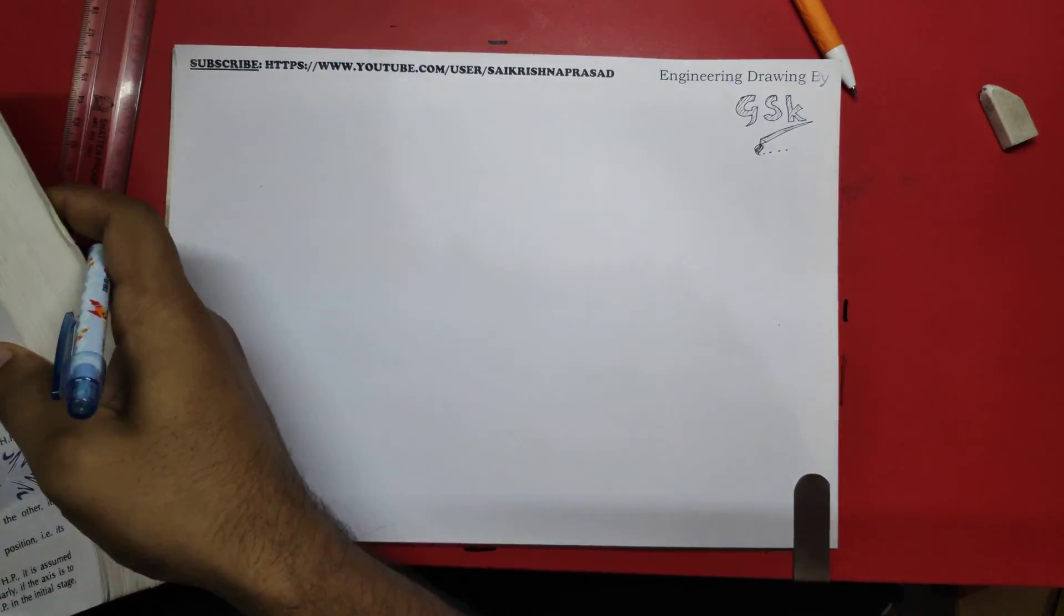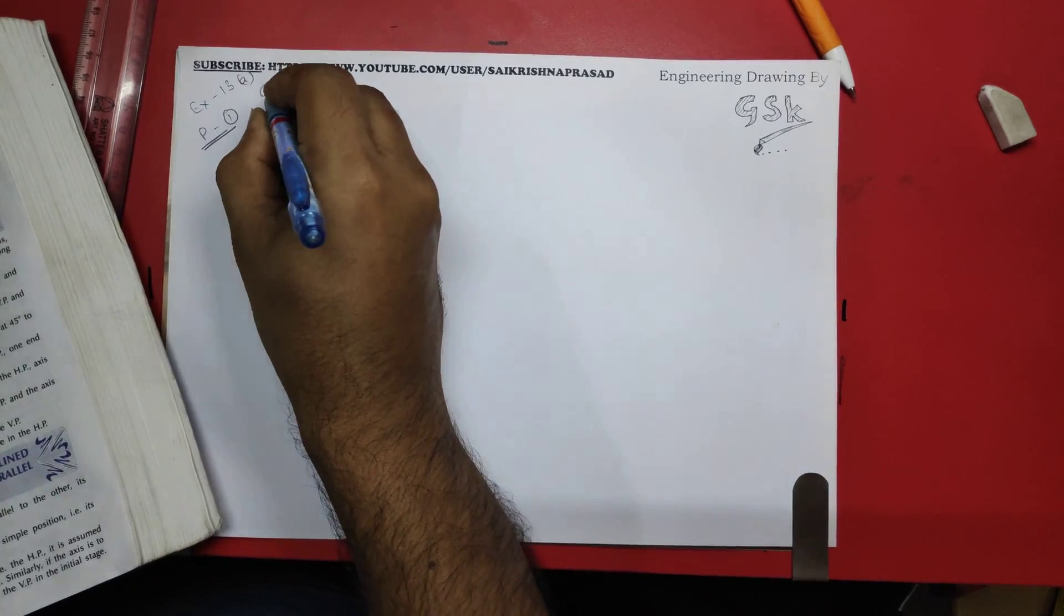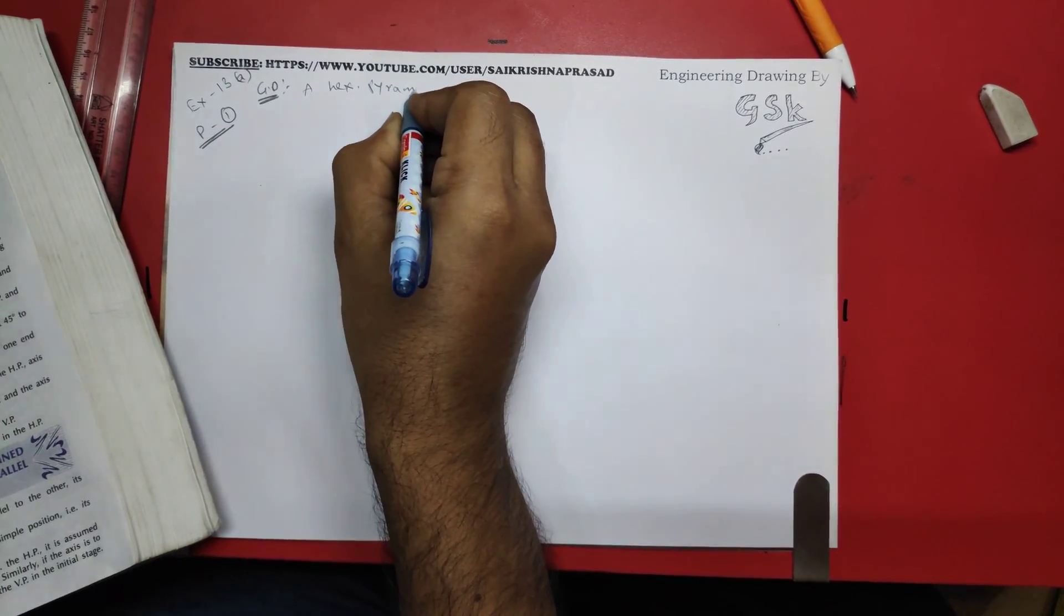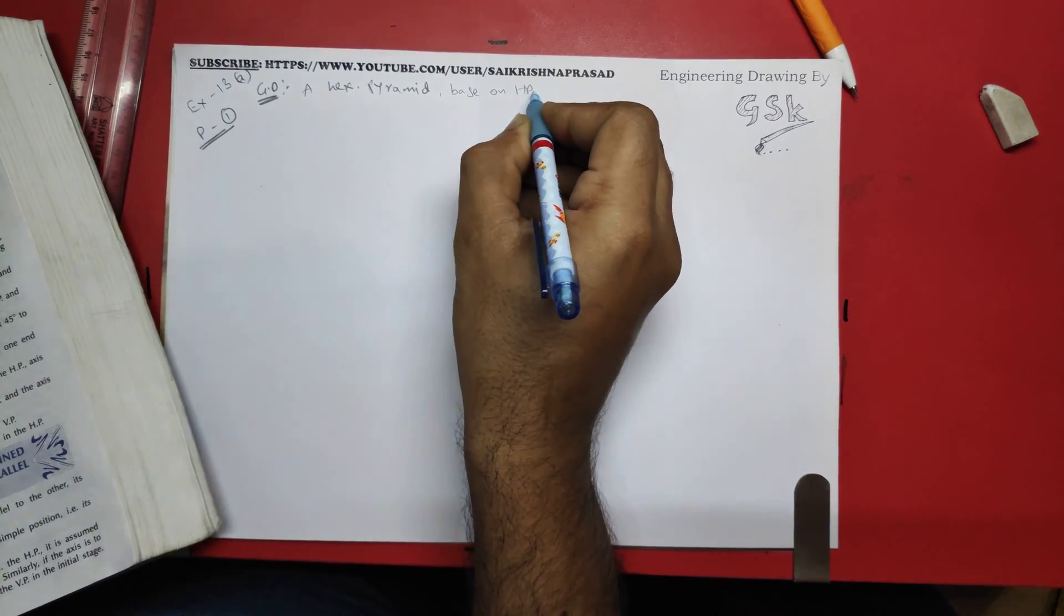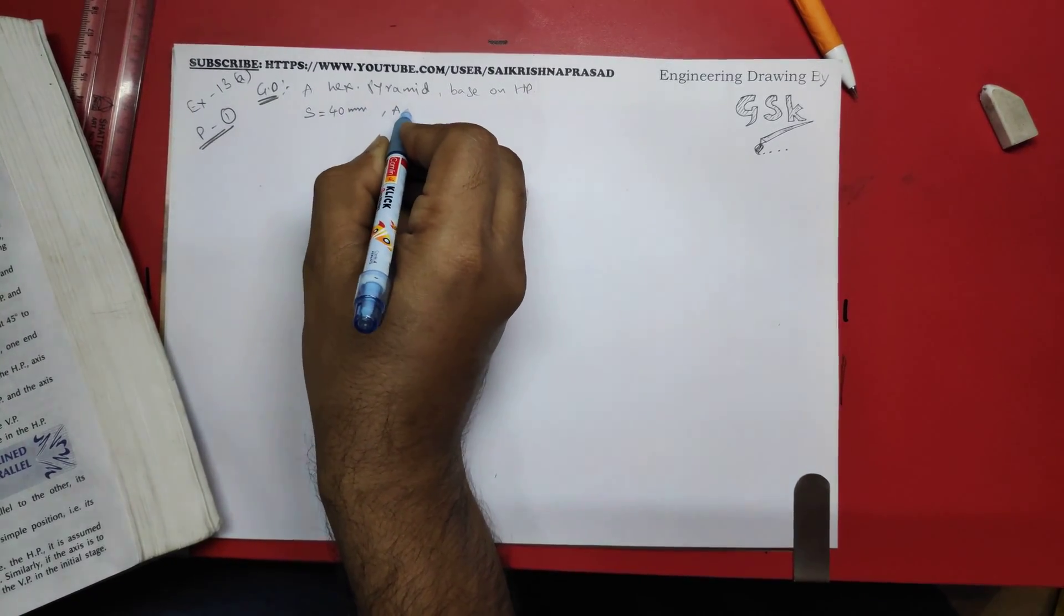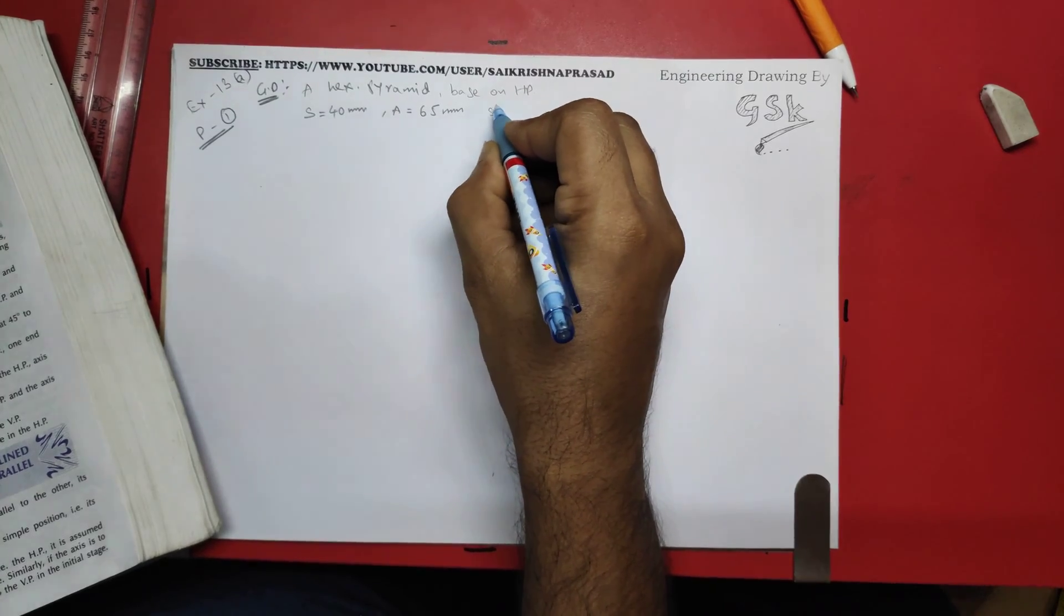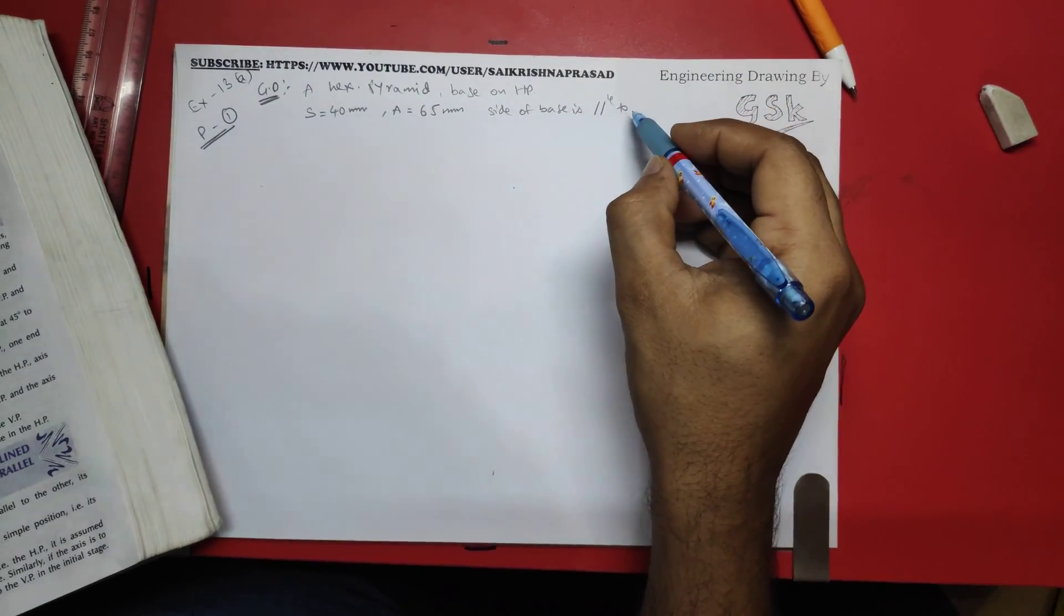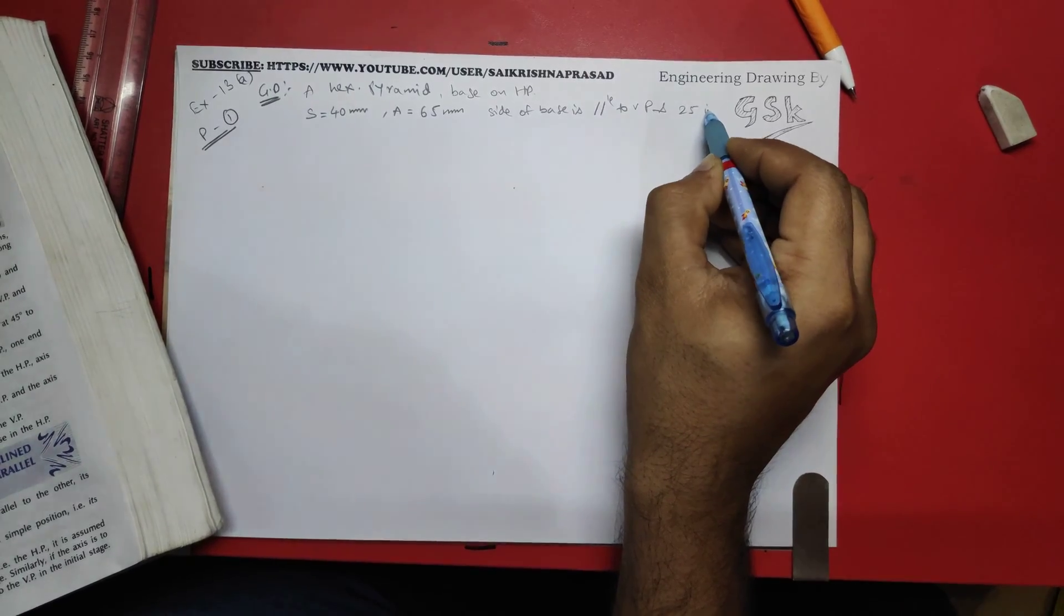Let's write the given data from the problem. Given data: a hexagonal pyramid whose base on HP, side 40 mm, axis 65 mm, and side of base is parallel to VP and 25 mm in front.